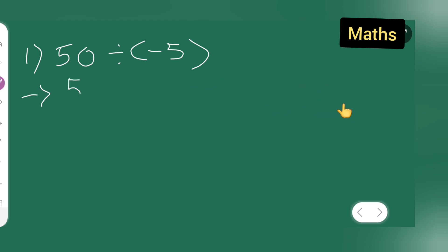Okay then let me start. So first what I have to do is write 50, multiply it and take the reciprocal of this. So what will be the reciprocal? It will be 1 upon minus 5, right. Now what I am going to get is 50 upon minus 5.